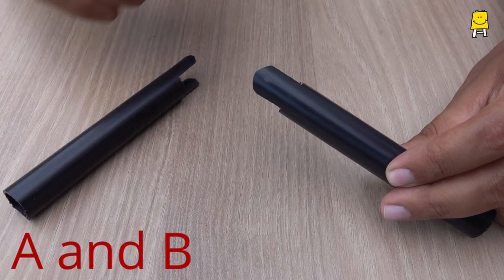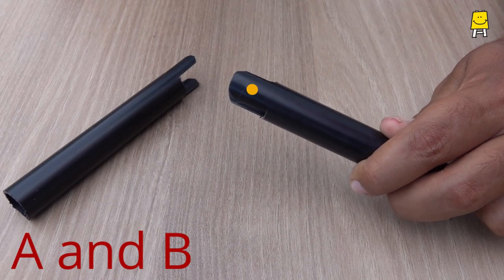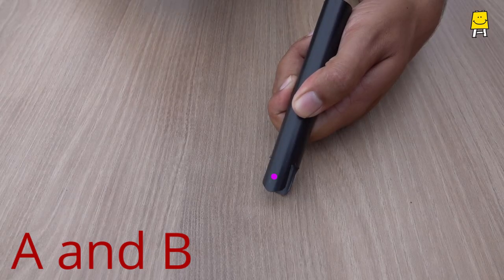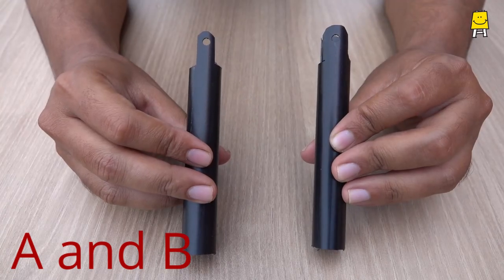Mark a point between the two shapes on both sides. Make holes on the marked points using scissors. The end result should look like this.